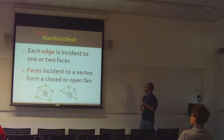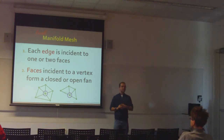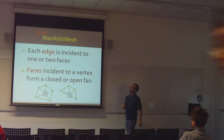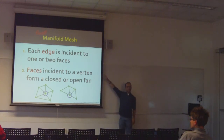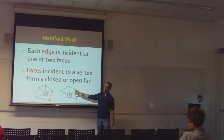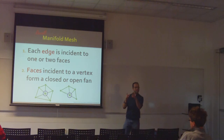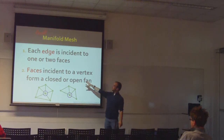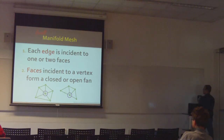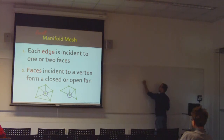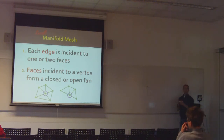Remember from before that in this class we'll mainly be discussing objects called manifold meshes. A manifold mesh is the discrete version of a surface. We'll be talking about triangle meshes — just a bunch of triangles linked together. A manifold mesh has two properties: first, each edge of all these triangles is adjacent to either one or two faces. We saw that example before where an edge adjacent to three faces creates a weird fan thing which doesn't look like a surface. And each set of faces incident to a vertex forms a closed or open fan.